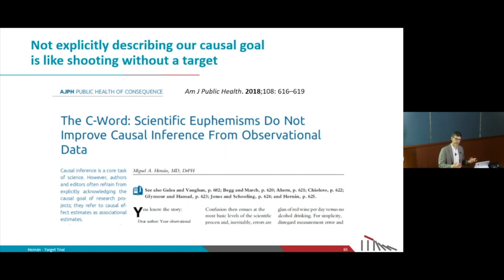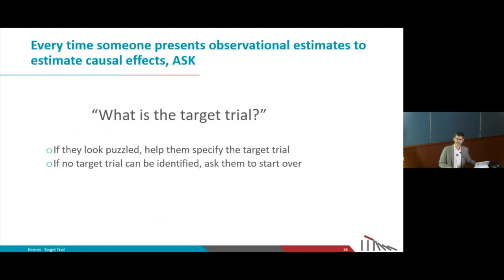This is not about associations — our goal is causal. Therefore we have to precisely specify our causal question in the form of a target trial and then emulate it with the observational data. Only if we put it in these terms can we design an observational analysis compatible with the question we're trying to answer. So every time someone presents effect estimates from an observational study, ask them: what is the target trial? If they know, you'll engage in a very fruitful scientific exchange. If they don't, you are going to help them a lot.